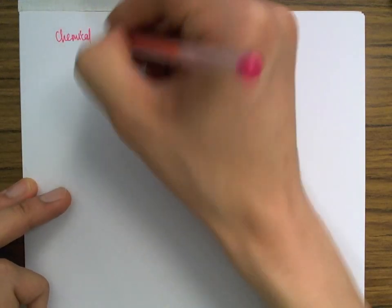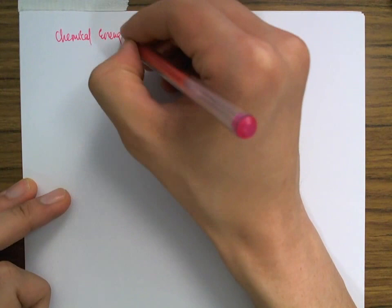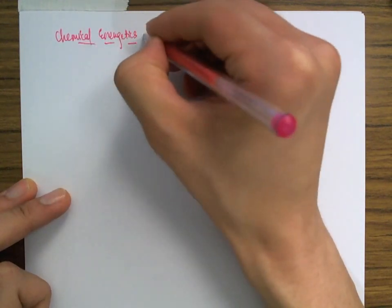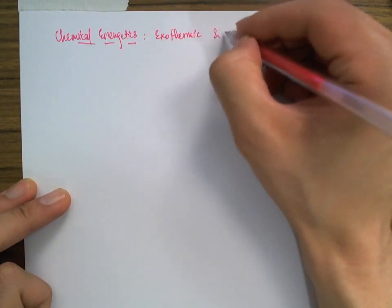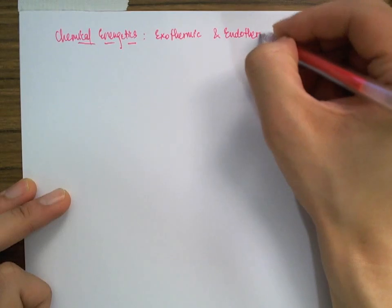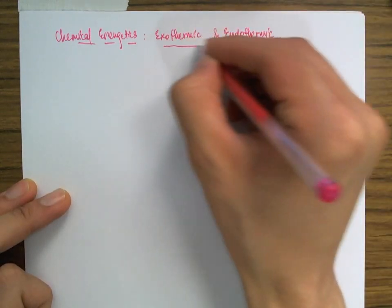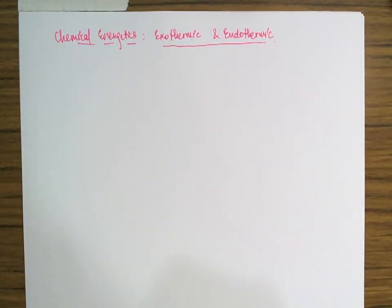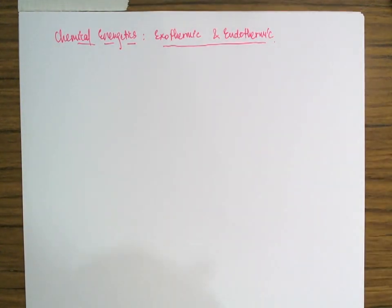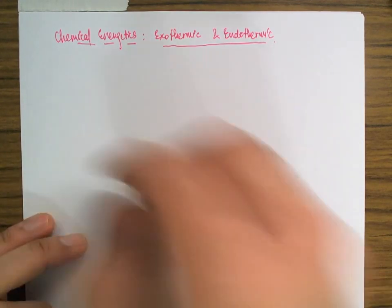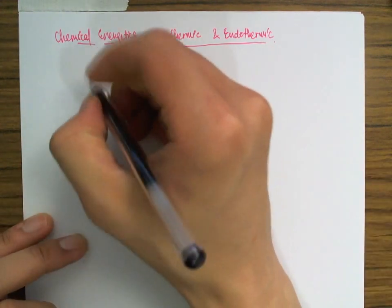Our topic is chemical energetics and in particular exothermic and endothermic. We'll be looking into the meanings of these two terms. Some reactions give off energy, meaning when you touch the test tube they feel warm, whereas other reactions take in energy so when you touch the test tube it feels cold. Let's take an example here.